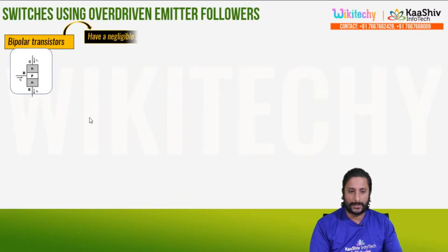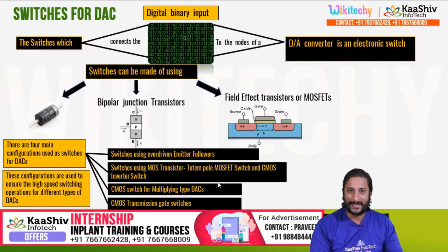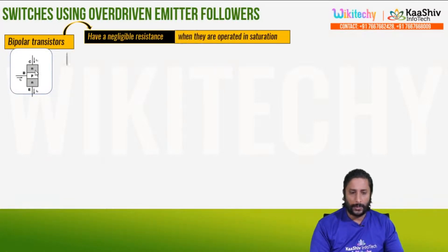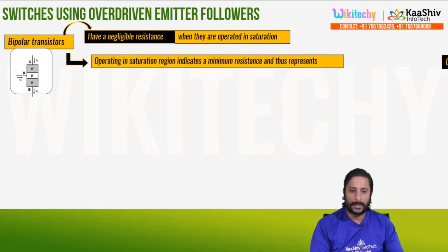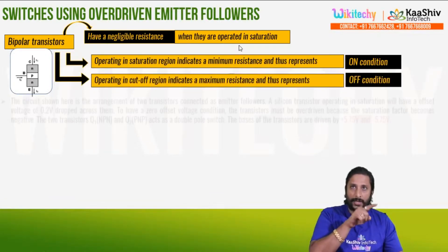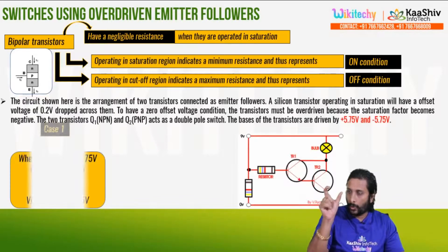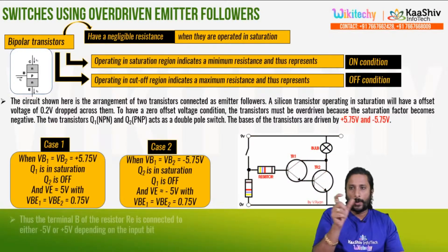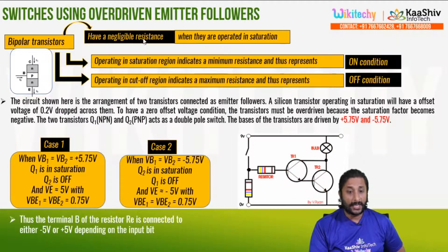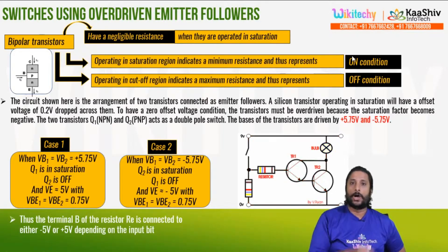The bipolar switches have a negligible resistance when they operate in saturation. Operating in saturation indicates minimum resistance — that is the resistance-on condition. Minimum resistance in operating saturation.